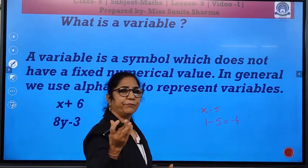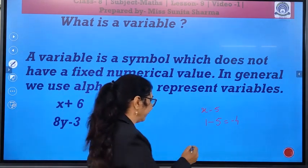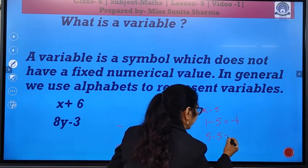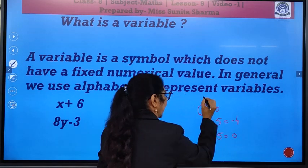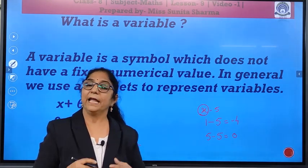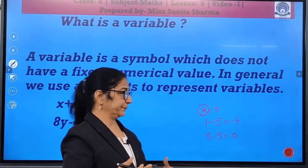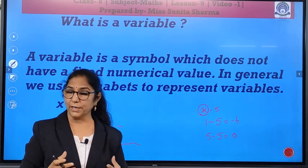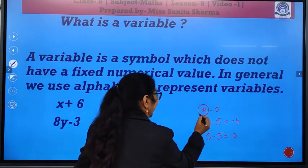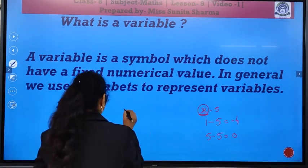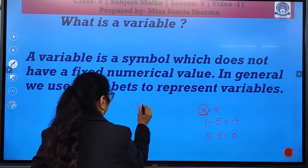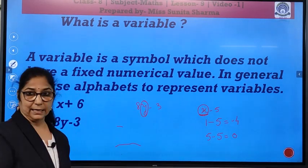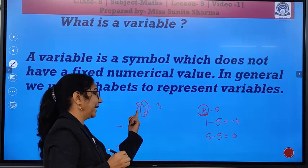So, x is a variable and it can have any numerical value. Instead of 1, if you want 5, you can take 5 also, 5 minus 5 is equal to 0. So, here variable can have any numerical value. We use alphabets to represent variables. We use alphabets. So, this x is an alphabet.